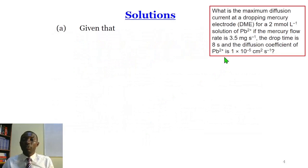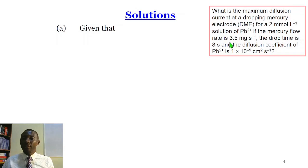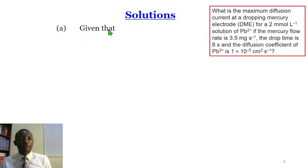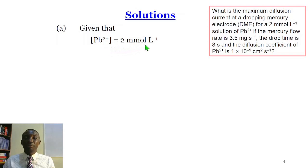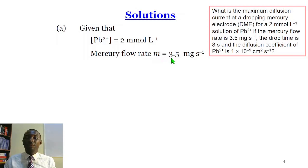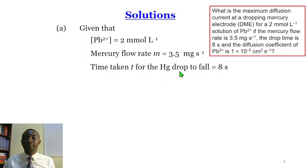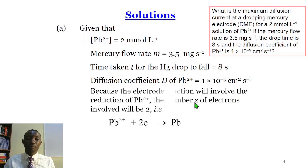For question A: what is the maximum diffusion current at the dropping mercury electrode for a 2 millimole per liter solution of lead if the mercury flow rate is 3.5 milligrams per second, drop time is 8 seconds, and diffusion coefficient D of lead is 1 × 10⁻⁵ centimeters squared per second? From the data, the concentration of lead is 2 millimole per liter, mercury flow rate is 3.5 milligrams per second, drop time is 8 seconds, and diffusion coefficient D is 1 × 10⁻⁵ cm² per second.